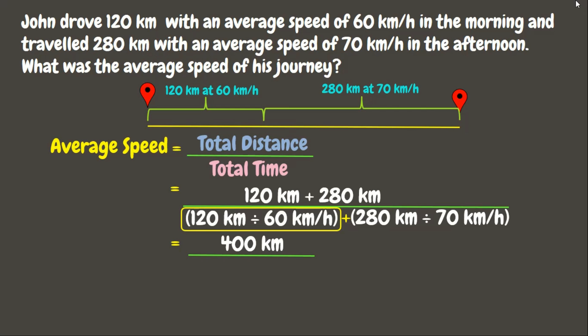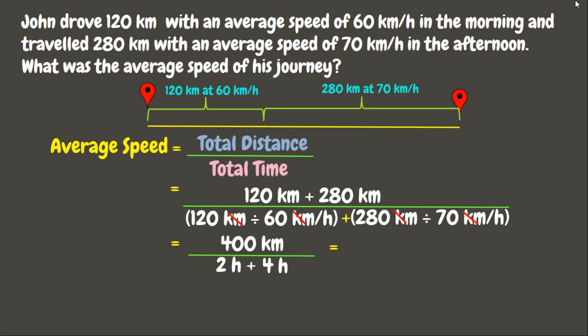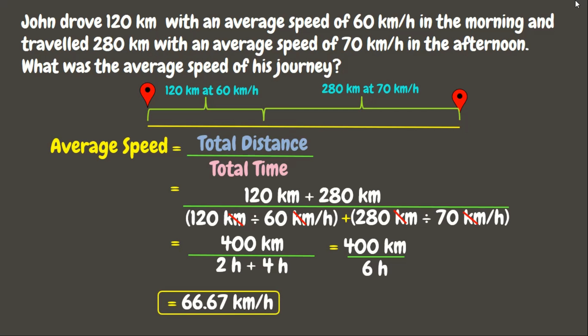For 120 kilometers divided by 60 kilometers per hour, we can cancel the kilometers, giving us 120 divided by 60 = 2 hours. Plus, 280 kilometers divided by 70 kilometers per hour — cancel kilometers — gives us 4 hours. Finally, 400 kilometers divided by 6 hours equals 66.67 kilometers per hour. This is the average speed.